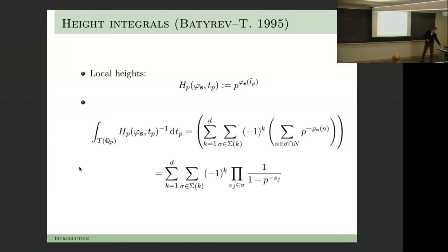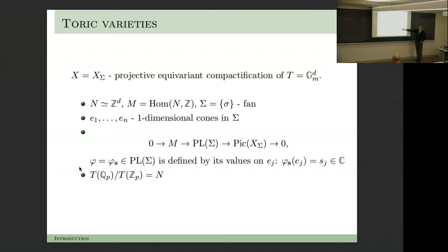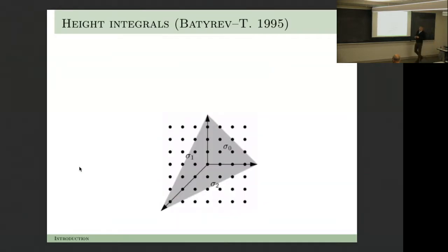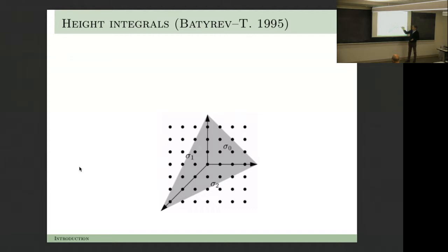Phi_s is a piecewise linear function defined by its values on one-dimensional generators—it's linear on every cone. Let's look at the picture: our favorite picture, this is P². If you take G_m over Q_p squared modulo the integers, you map it into this lattice and see these lattice points. We have functions that assign to each generator—here, for example, it's S₁. The function on this cone is a linear function, simply p to the power s₁ of the corresponding lattice point. So if you restrict to here, it's exactly the same as what we had for P¹. And if you want to integrate, you're summing over lattice points in each of the cones—it's a product of geometric series.